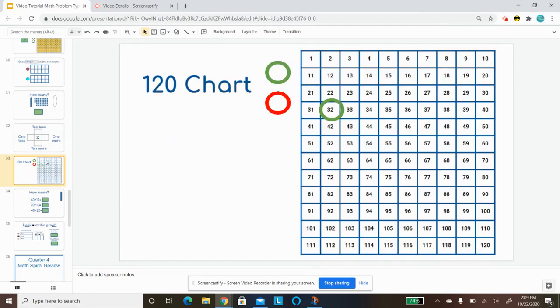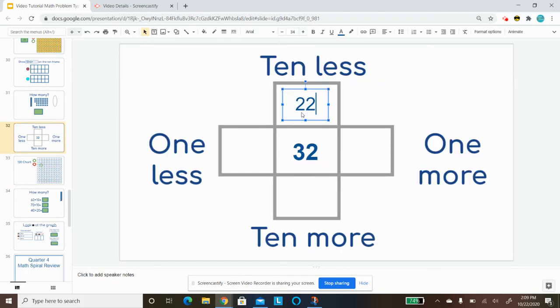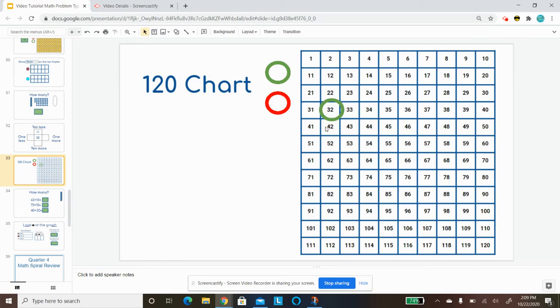And then I need to think 10 less is 22. 10 more is 42.